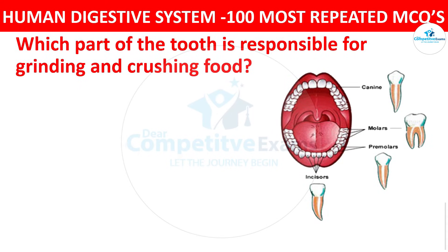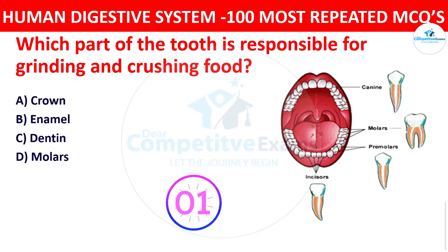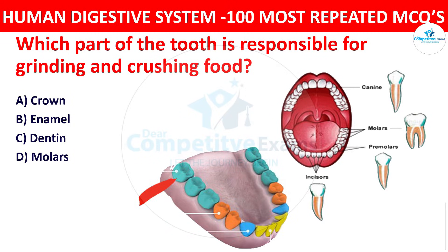Which part of the tooth is responsible for grinding and crushing the food? The options are crown, enamel, dentine, or molars. The right answer is molars. The molars are the flat teeth at the back of the mouth responsible for grinding and crushing the food.